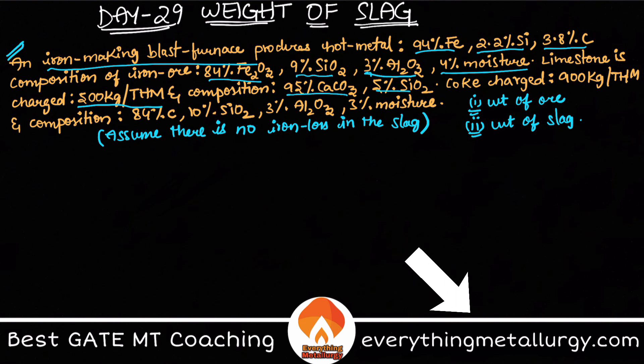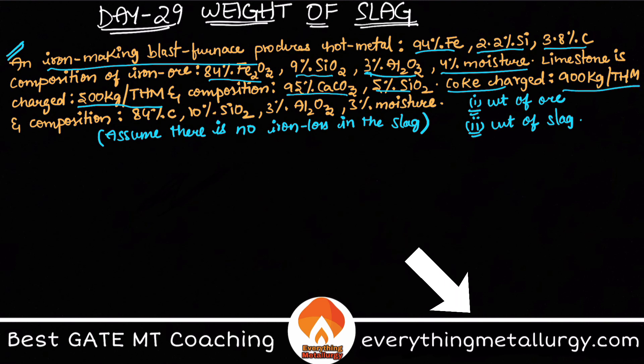This segregation of what the charged materials are and their compositions is important, because even if you miss one percentage in one raw material, your calculation will go wrong. The final charged material is coke, which is 900 kg per THM, with a composition of 84% carbon, 10% SiO2, 3% Al2O3, and 3% moisture.